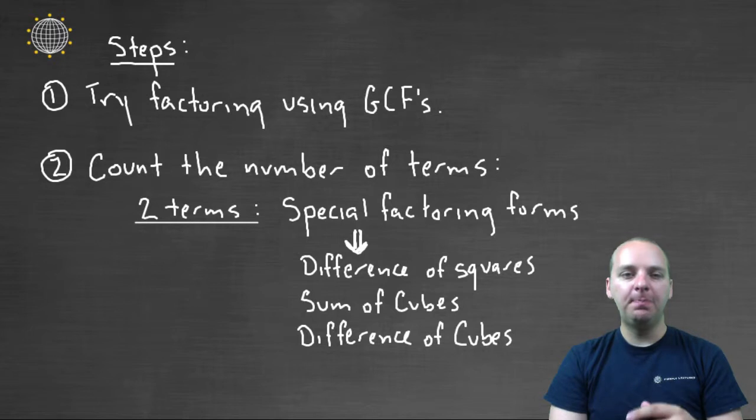Now once that's been done, then the best approach is to look at how many terms you have because that will indicate what method you're going to use. If you have two terms, if you have a binomial, chances are it's going to be a special factoring form. And we had three: difference of squares, sum of cubes, and difference of cubes.